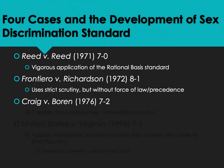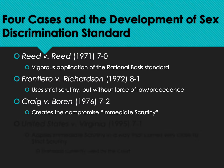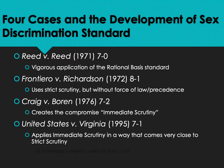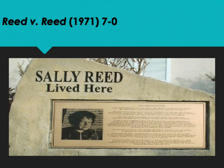Third is Craig v. Boren, dealing with different age standards for consuming near beer — low-alcohol beer — from 1976. Even though it seems inconsequential, it's a very important case because it creates the compromised intermediate scrutiny standard used for evaluating sex discrimination cases. Finally, United States v. Virginia from 1996 deals with the Virginia Military Institute. This case applies the intermediate scrutiny standard created in Craig v. Boren but does so in a way that comes very close to strict scrutiny, and it represents the standard currently used by the Court.